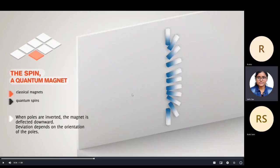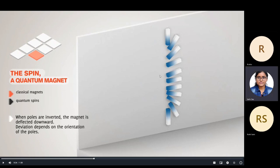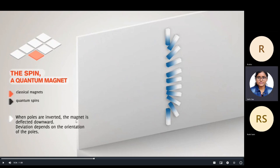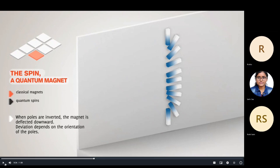For a classical magnet, depending on the orientation of the poles, they will distribute across the screen with no quantization — it's a continuous range depending on pole orientation. When the poles are inverted, the magnet deflects in the opposite direction. The deviation depends on orientation of the force — that is the classical magnet behavior.